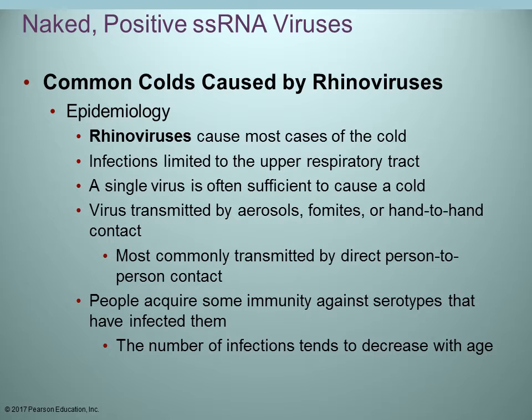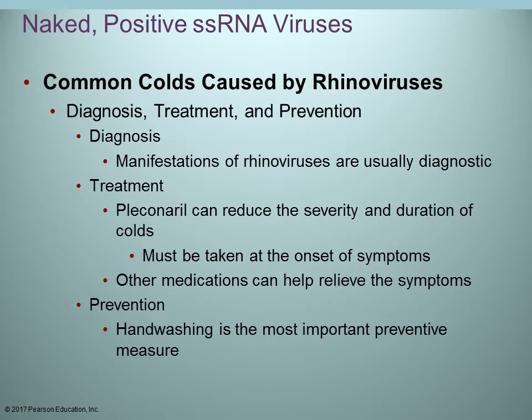Over time, people acquire immunity to the particular serotype or strain that infected them, which is why you tend to have fewer colds as you get older. The problem is there are so many different strains of rhinoviruses. Diagnosis is usually by symptoms. Treatment includes medicine that can reduce severity and duration, but it must be taken at the very beginning of symptom onset. Prevention: hand washing.